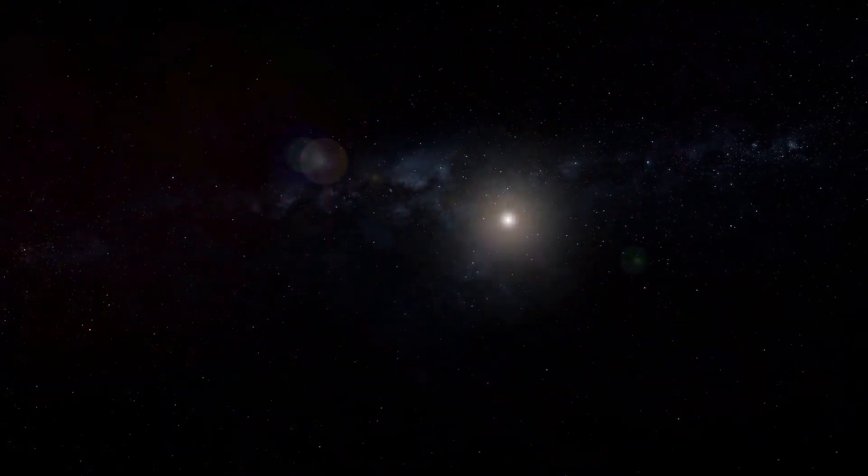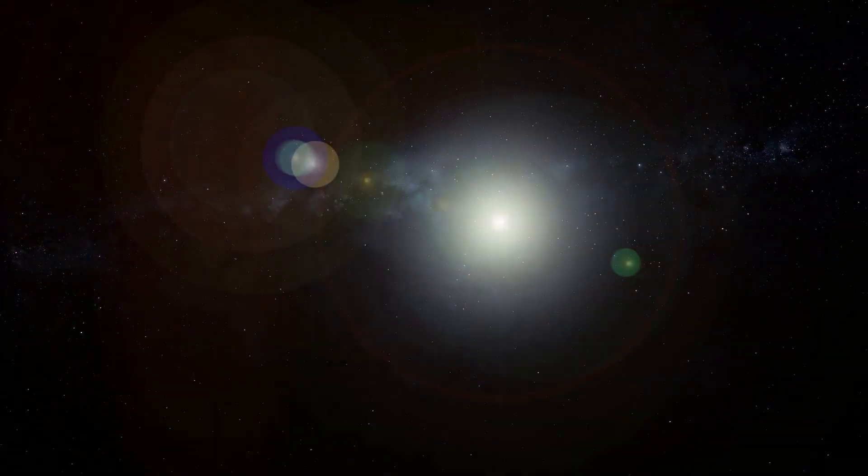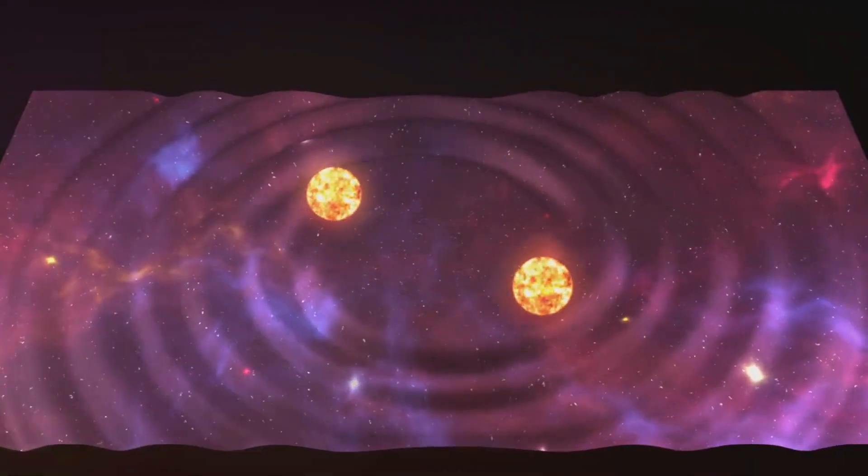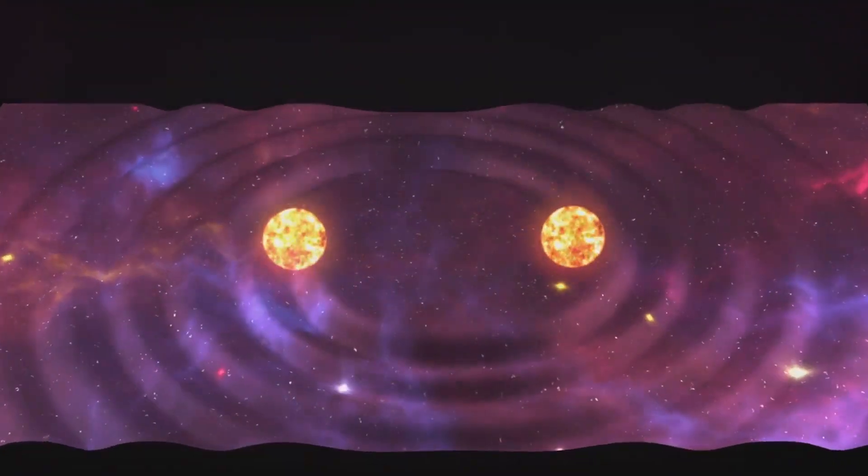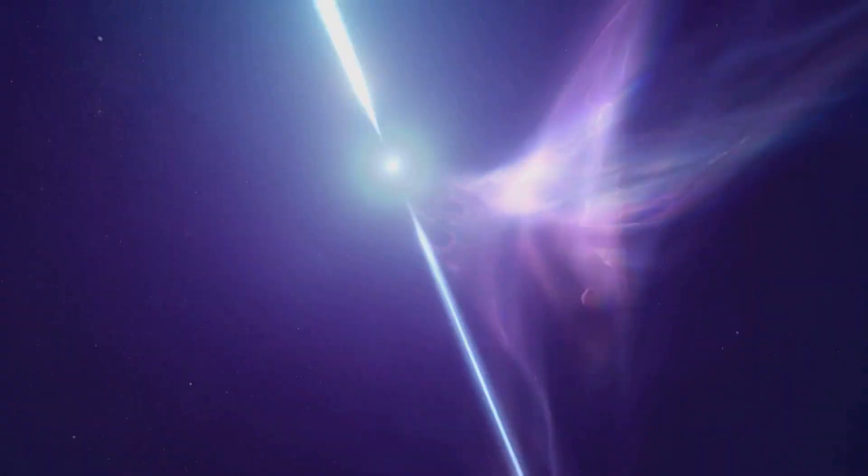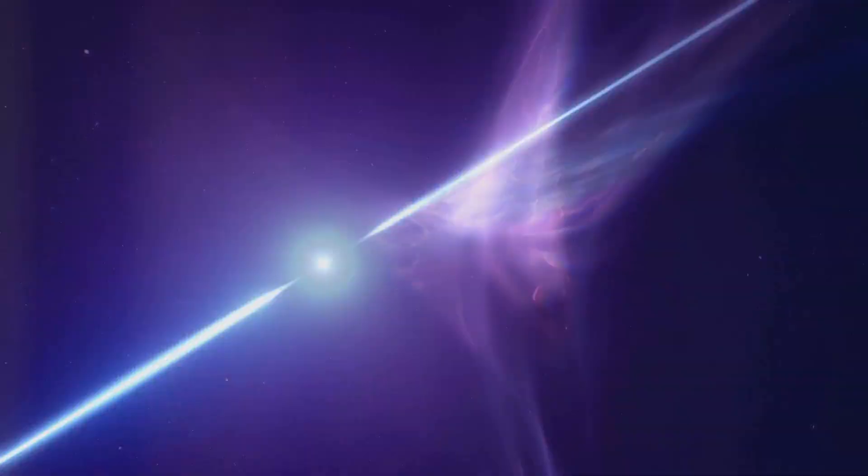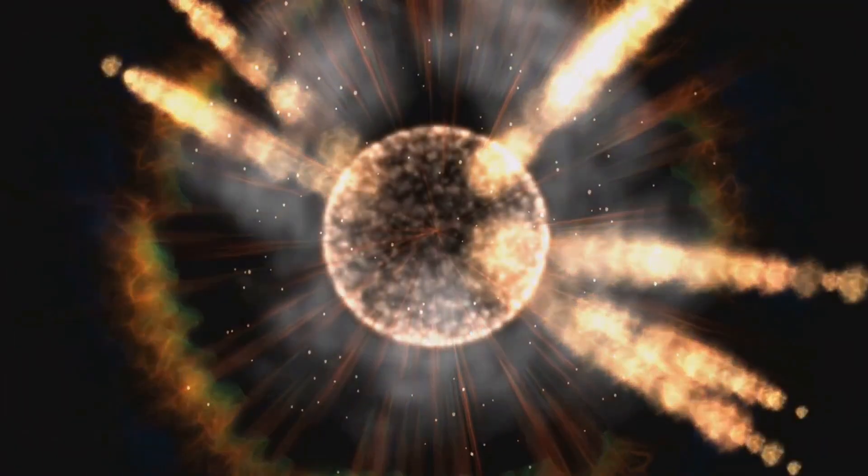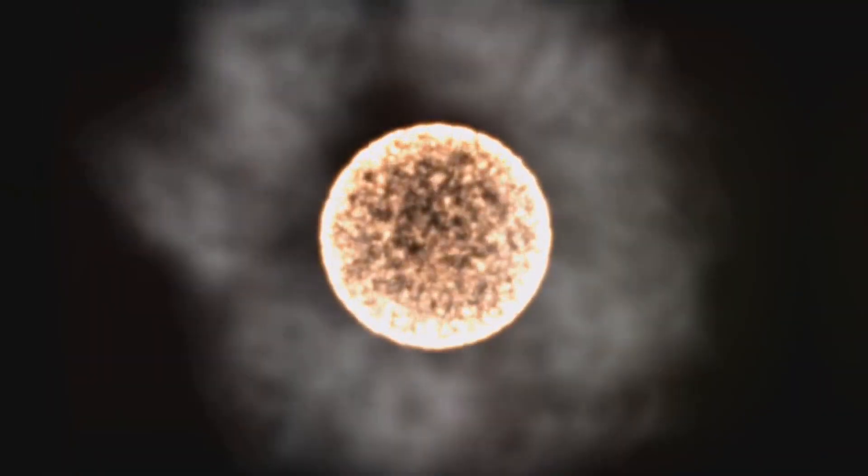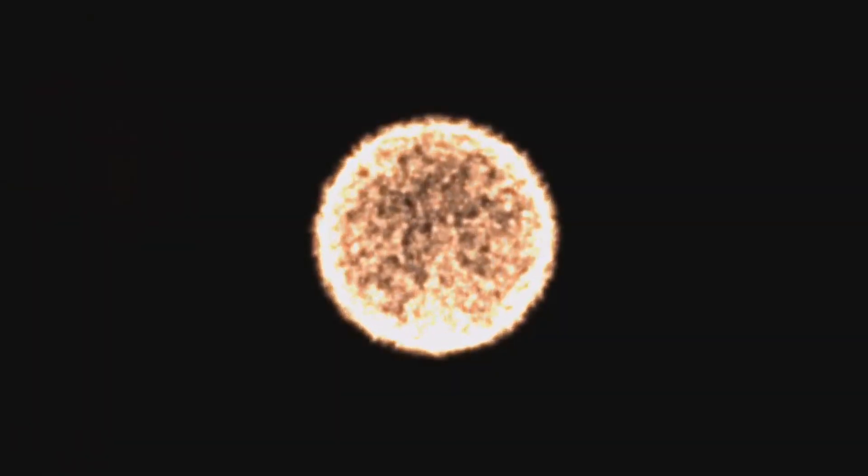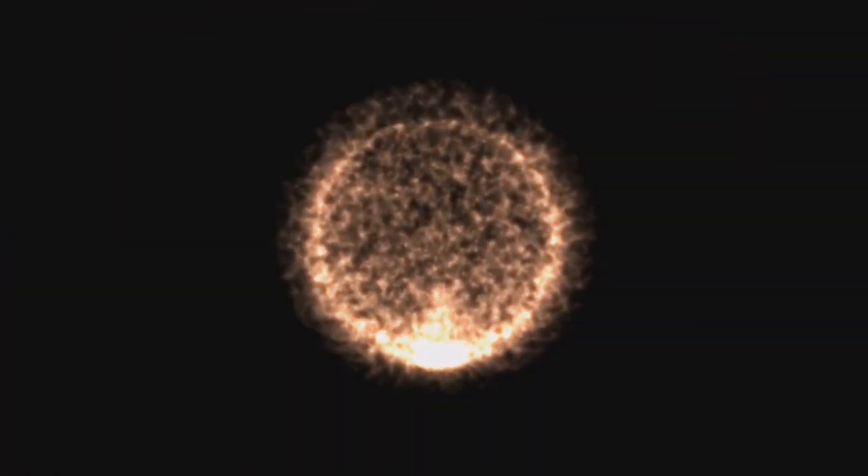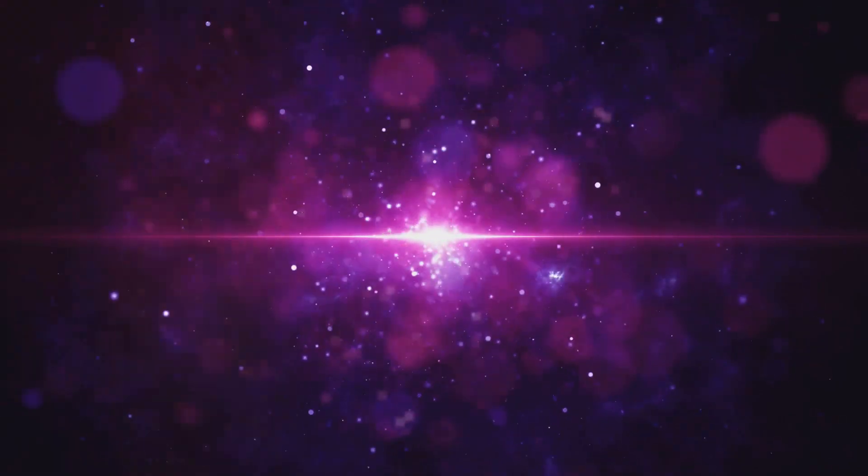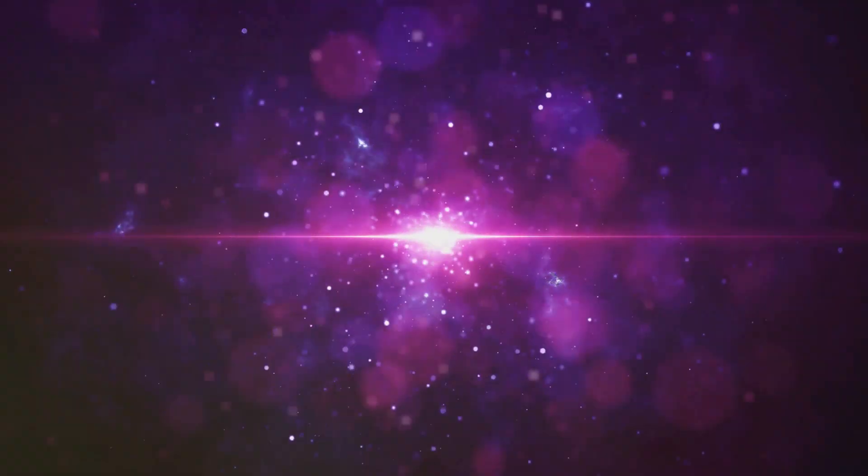While supernovae are responsible for creating many heavy elements, the very heaviest, such as gold and platinum, are thought to form primarily through another, even more extreme cosmic event: neutron star mergers. Neutron stars are the incredibly dense remnants of massive stars that have exploded as supernovae. When two neutron stars collide, they merge in a cataclysmic explosion, releasing tremendous amounts of energy and spewing out a shower of neutrons. These neutrons are rapidly captured by atomic nuclei, creating heavy neutron-rich isotopes.